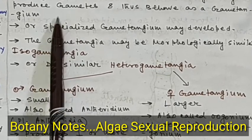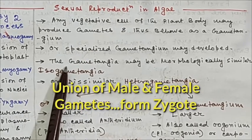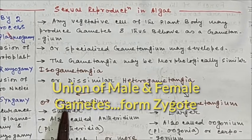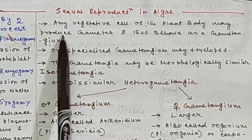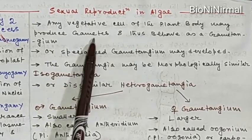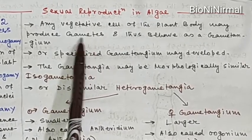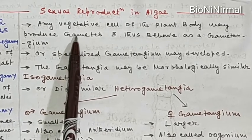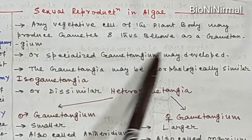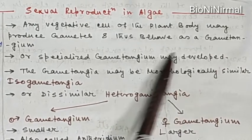In this video we will discuss sexual reproduction in algae. In sexual reproduction, the male gametes and the female gametes are united with each other to form the zygote. In cases of sexual reproduction in algae, any vegetative cells of the plant body may produce gametes. The structure in the vegetative plant body which produces gametes is called the gametangium.